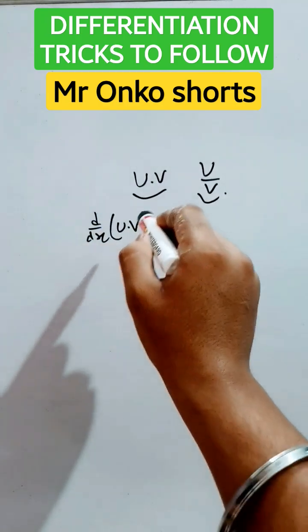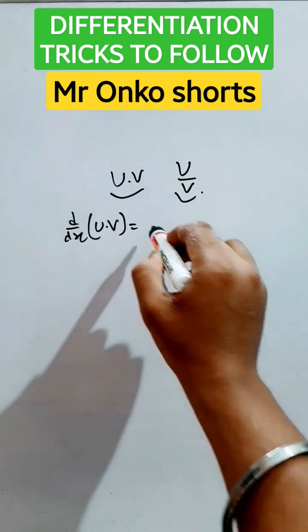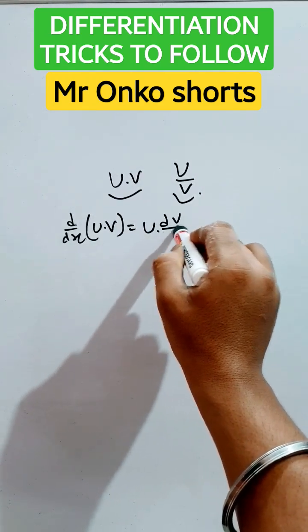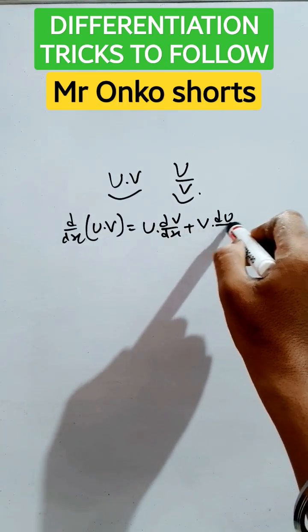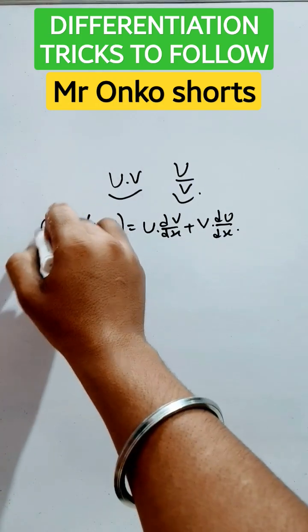Here now we have to take u fixed and take differentiation of v with respect to x, then plus of take v fixed and differentiation of u with respect to x. This is the first case.